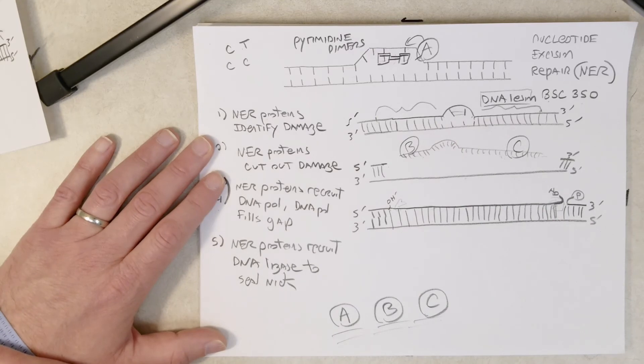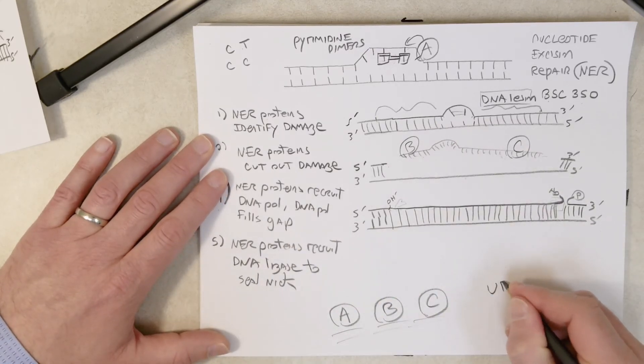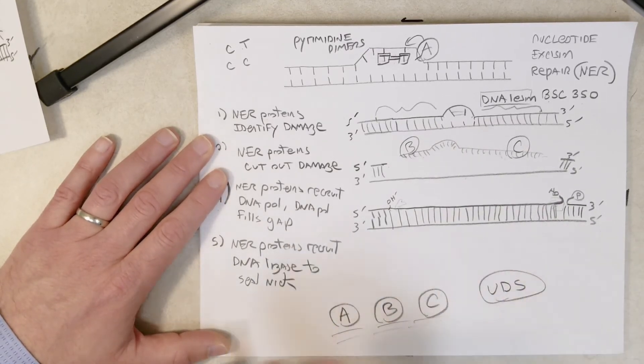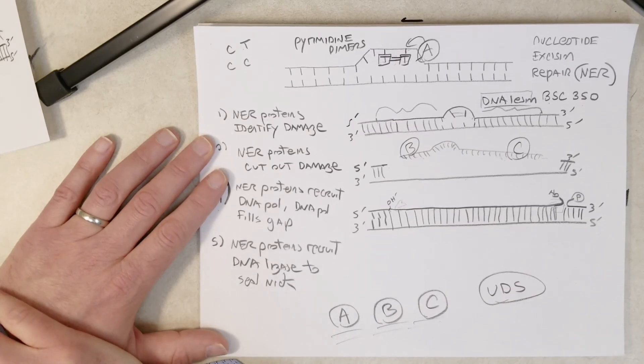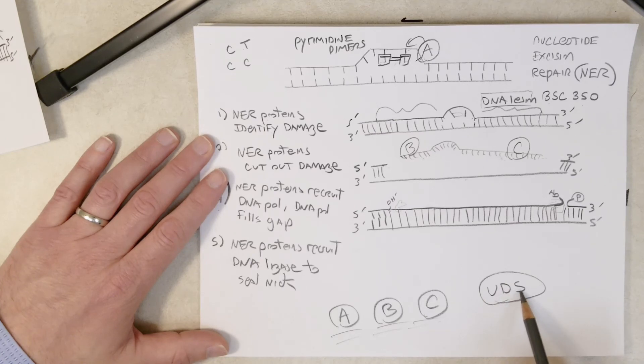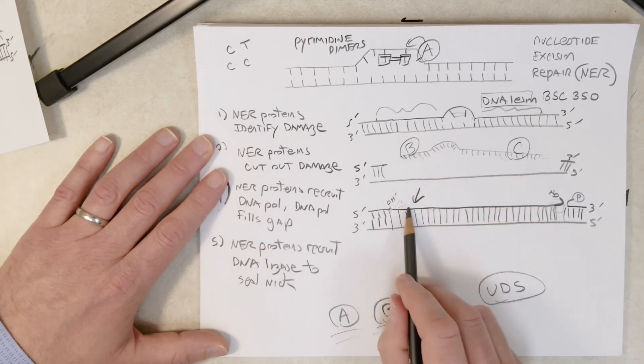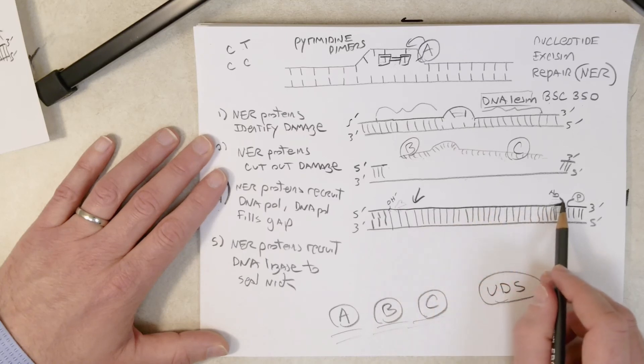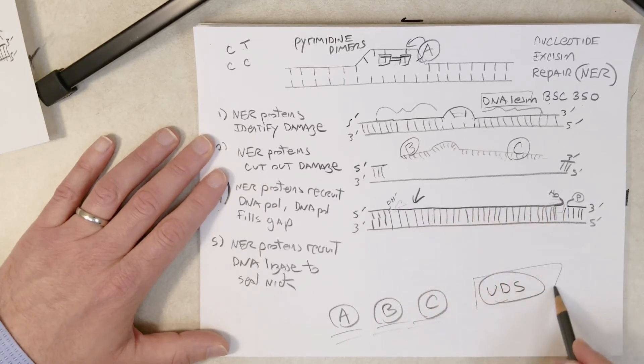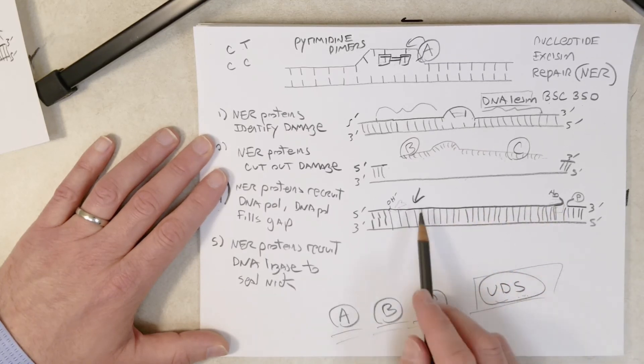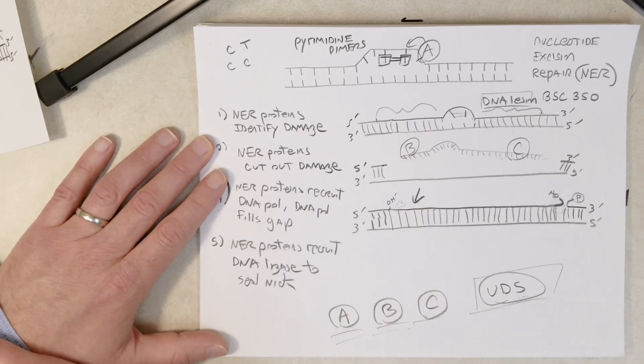Another thing we talked about in the last video was UDS, unscheduled DNA synthesis. It turns out the unscheduled DNA synthesis that James Cleaver was observing was this step right here, when DNA polymerase comes in and fills the gap here. So he had an assay that allowed him to detect this step of the nucleotide excision repair process.